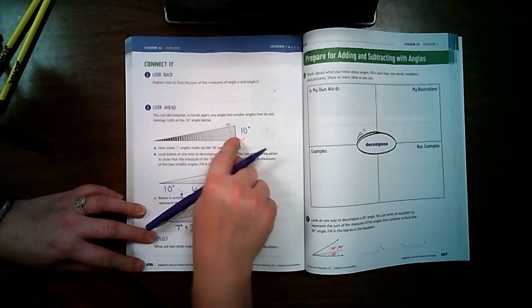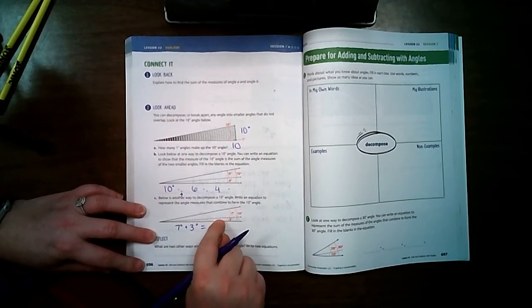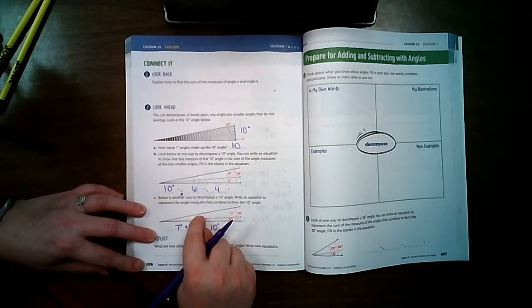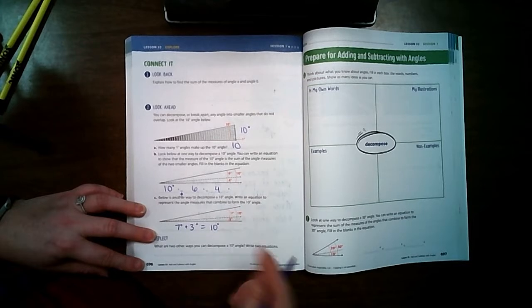Even though these don't have these little lines right here, if I measured that, it would still be worth 3 degrees. And if I measured this, it would still be worth 7 degrees. And I know that 3 plus 7 equals 10.